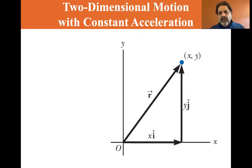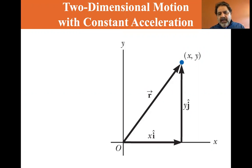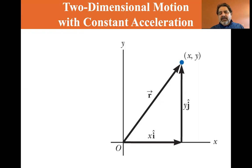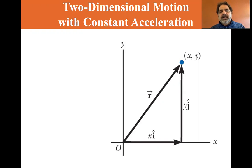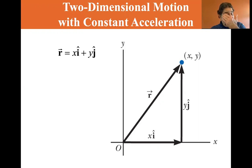Here is a position vector r and it has two components: x i-hat and y j-hat. So it's x times the unit vector i and y times the unit vector j. The square root of the sum of the squares of those gives you the magnitude of r, and the arctangent of y over x gives you the angle. It's just a reminder of what we studied in the last chapter on vectors. So r is equal to x i plus y j — that's vector addition.